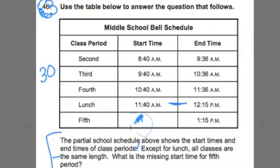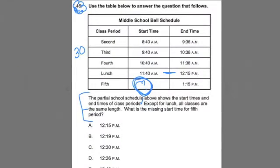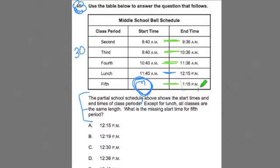Oh, so we are trying to find that start time. By pointing out that lunch isn't the same length and that all these others have the same length, it kind of gets me focused on the length of the classes themselves. Because if I know the length, I can work backwards from my end time and find my start time. So we have to find the length.